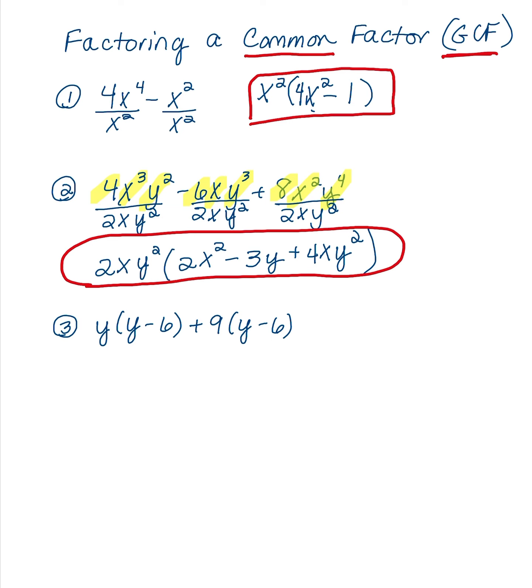Now if you look at the third example, we have two terms. Some students would look at that and say that's four terms, but that's only two terms. And each term has a y minus 6. So that is what is common. So that means I can factor out the y minus 6.